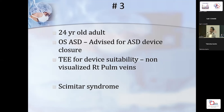Another case was a 24-year-old adult with a likely ASD, scheduled for ASD device closure. On TEE, the right pulmonary veins could not be found. Catheterization revealed it was actually scimitar syndrome — entirely asymptomatic with no symptoms.